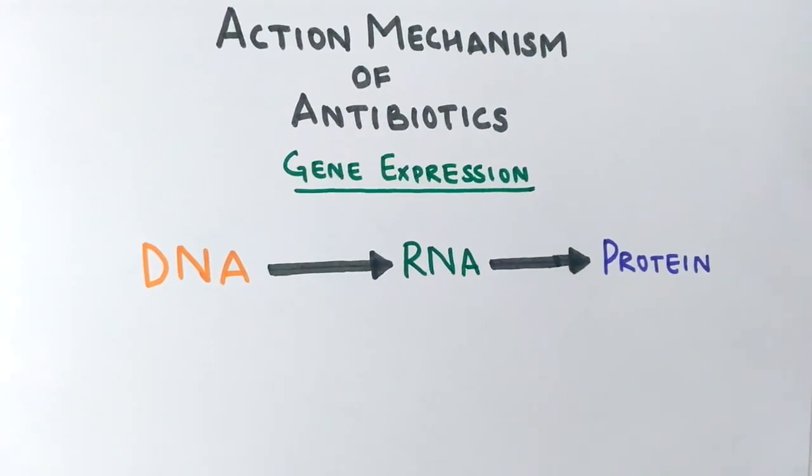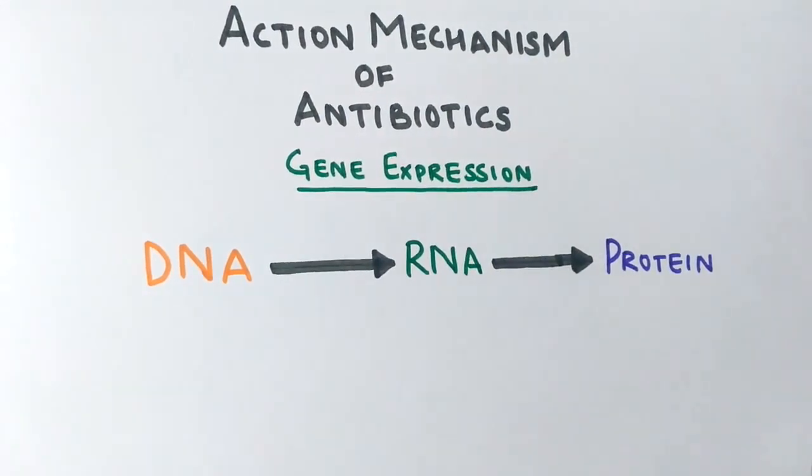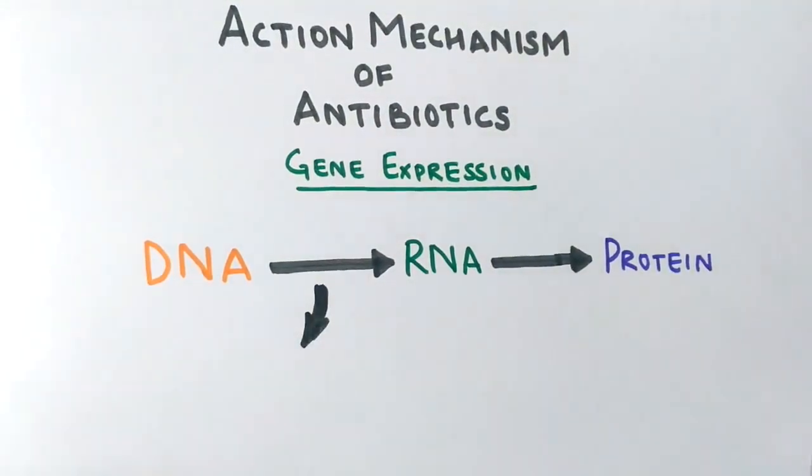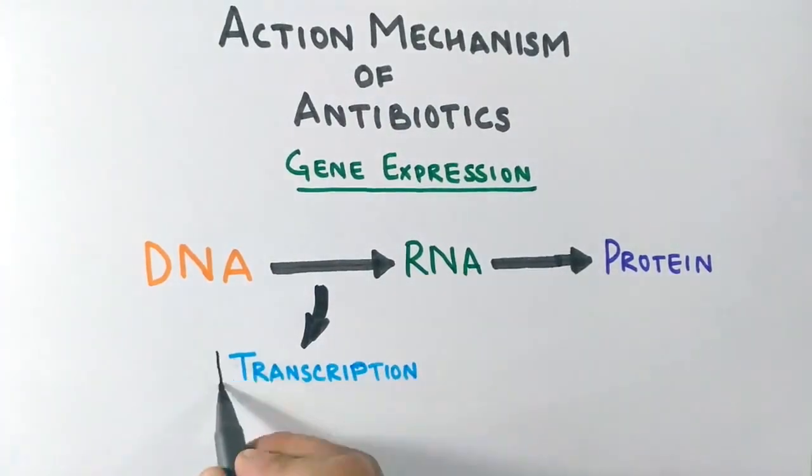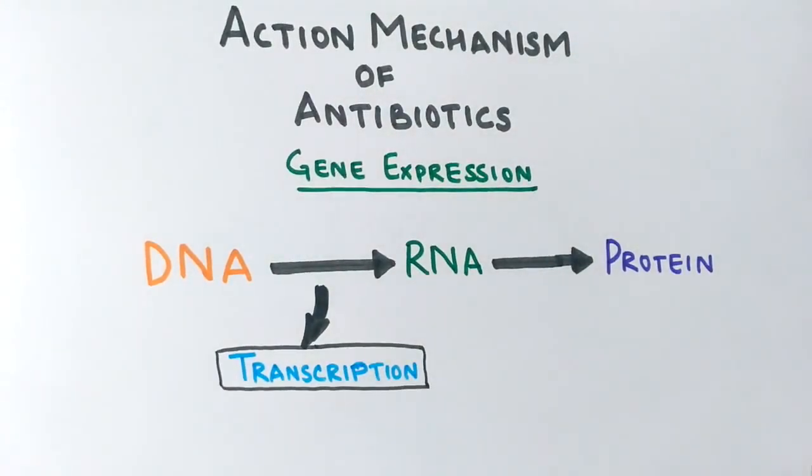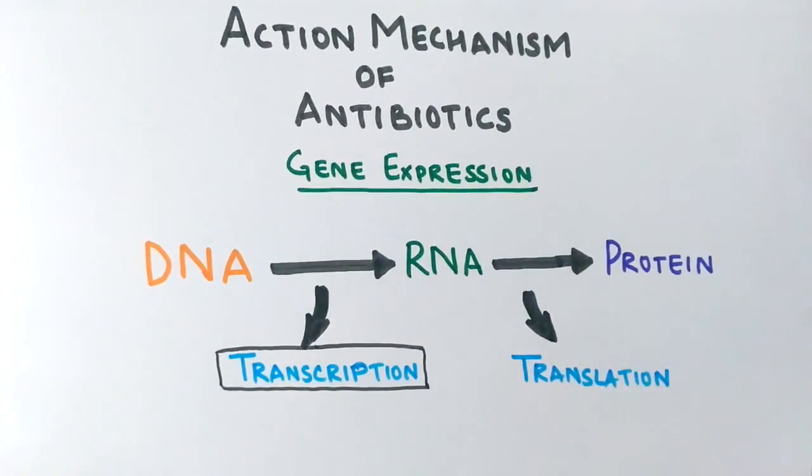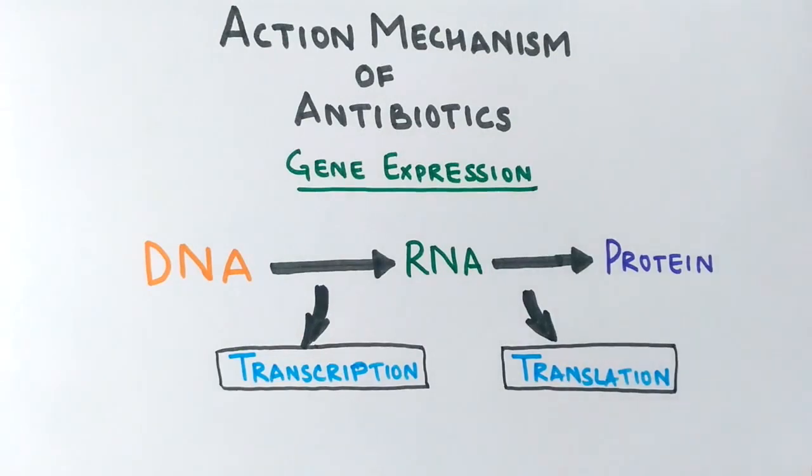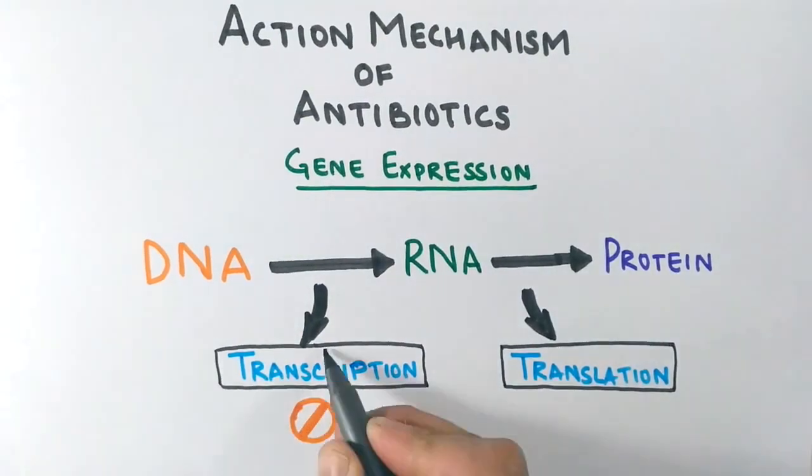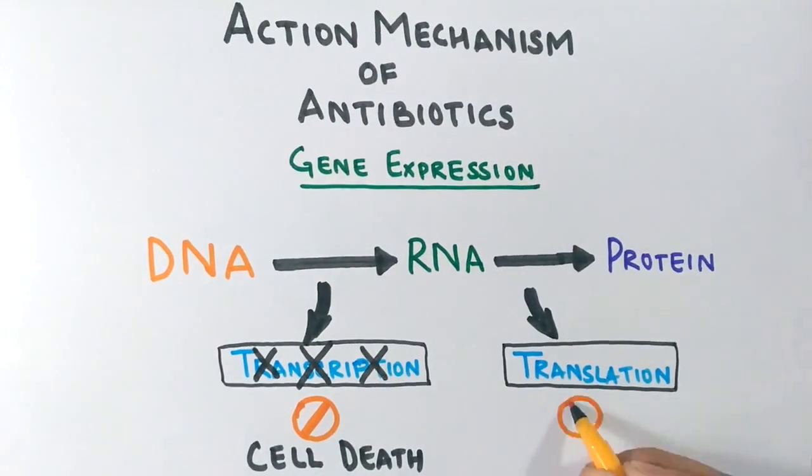We see the DNA transports its information into mRNA molecule through a process called transcription, and from the information of mRNA molecule the bacteria produce a protein in the process called translation. When both of the processes, transcription and translation, are stopped by antibiotics, the cell ceases to exist.